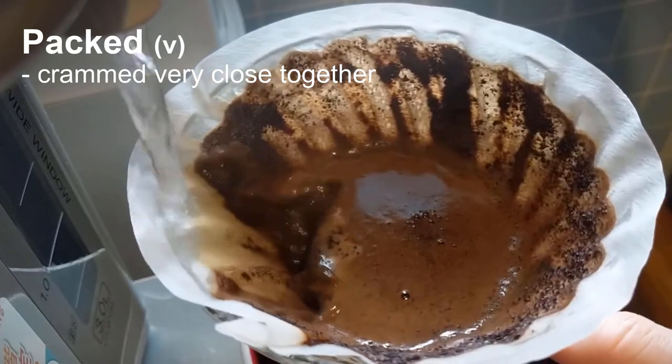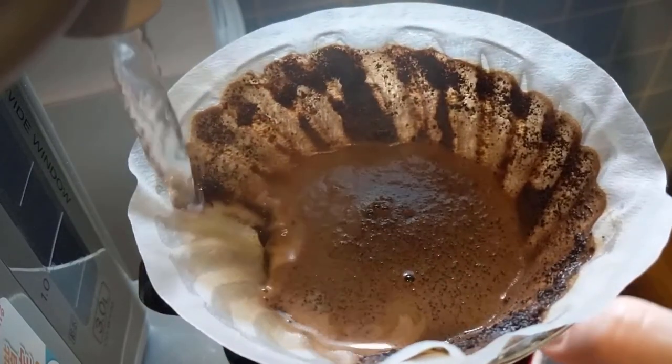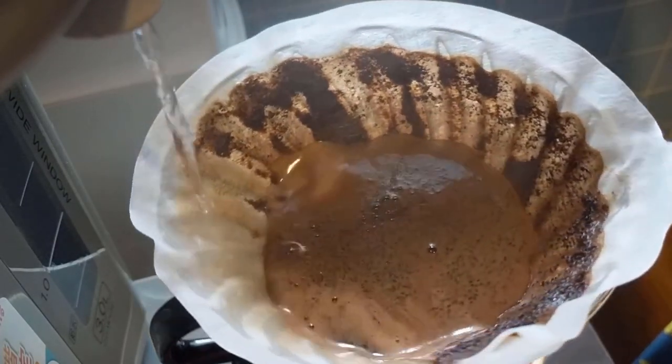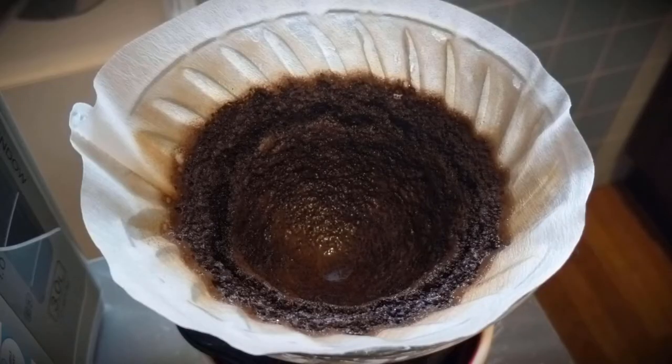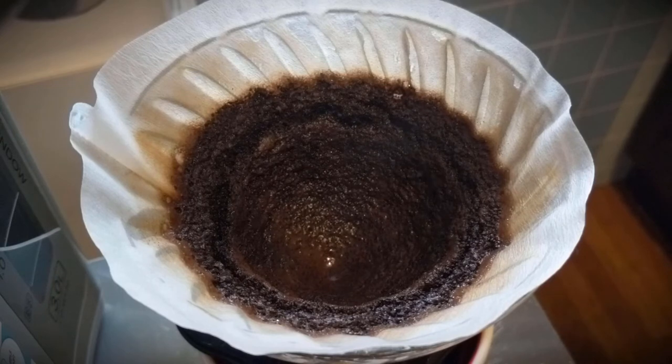I'll then keep adding water to the sides of the filter, which helps keep the grounds together. This slows down the water and extends the time the coffee grounds are wet, which makes the coffee stronger. Once I've added all the water I'll need, I let the grounds sit and the water drain out.